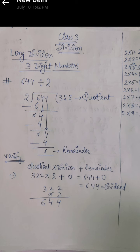So quotient is 322, into divisor which is 2, plus remainder which is 0. When multiply and plus both are there, we first multiply. So we will multiply 322 by 2. 2 twos are 4, 2 twos are 4, and 2 threes are 6. So I will get 644 plus 0. So it will be 644. Because when we add 0 to anything, the same number comes. That is exactly equal to our dividend which was 644. That means our answer is completely correct. We will say so verified.